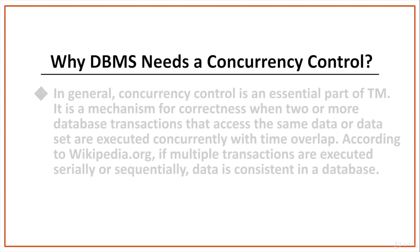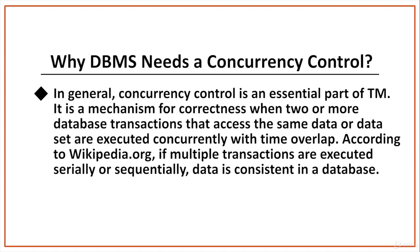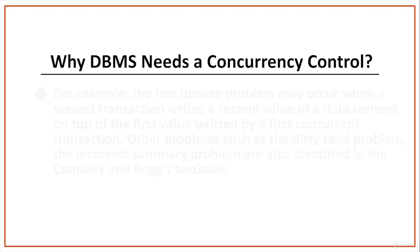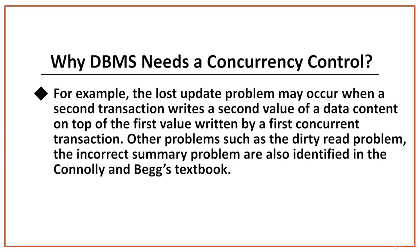In general, concurrency control is an essential part of TM. It is a mechanism for correctness when two or more database transactions that access the same data or data set are executed concurrently with time overlap. If multiple transactions are executed serially or sequentially, data is consistent in a database. However, if concurrent transactions with interleaving operations are executed, some unexpected data and inconsistent results may occur. Data interference is usually caused by a write operation among transactions on the same set of data in DBMS.